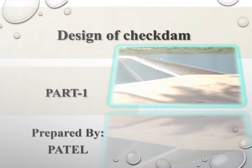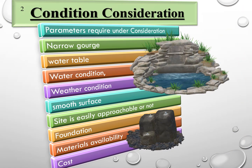How to design? For that we have to first consider which parameters are required. A narrow gauge should be existing, water table conditions should be sufficient as shown in figure, sufficient water should be stored, weather conditions, and whether the smooth surface site is easily approachable. Foundation should be properly available, like a rocky foundation as shown in figure. Also, material availability and cost are important factors for designing a check dam.